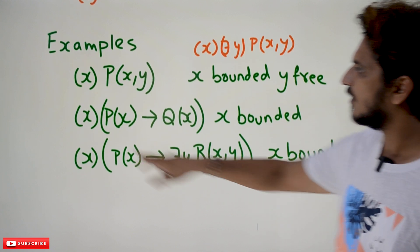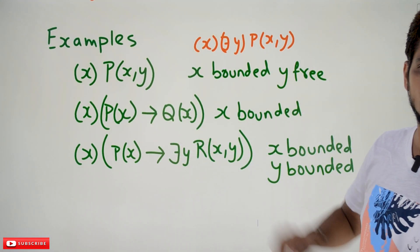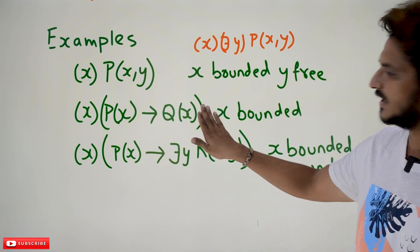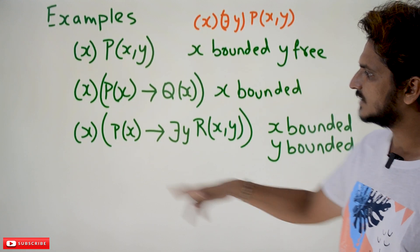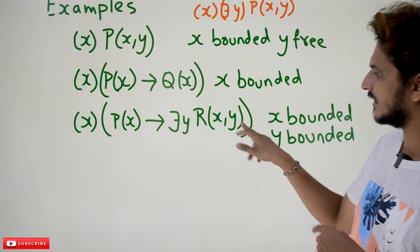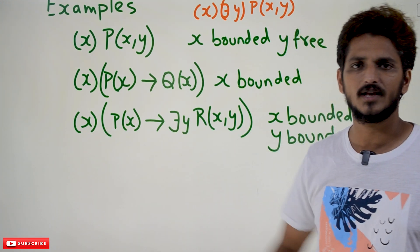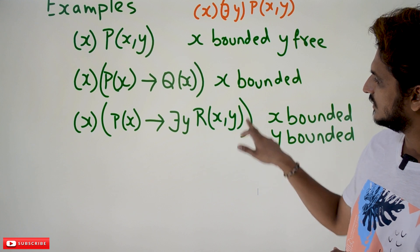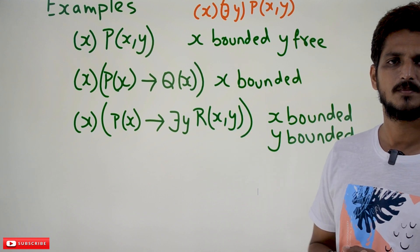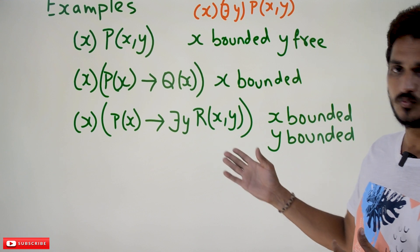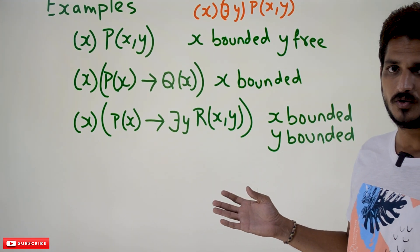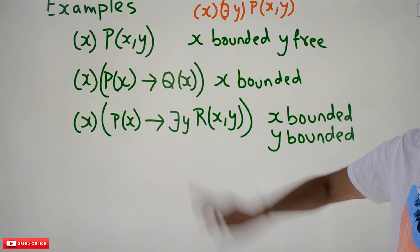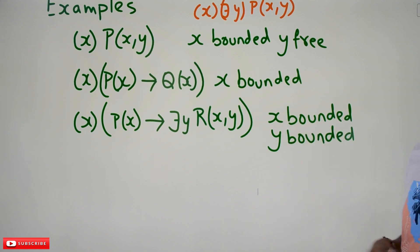One more example: for all x, P(x) implies Q(x). Here x is a bounded variable, and the scope of x belongs to this entire equation. One more example: for all x, P(x) implies there exists y, R(x, y). The scope of 'for all x' belongs to the entire equation. The scope of 'there exists y' belongs only to R(x, y). So both x and y are bounded variables — x is bounded to 'for all,' and y is bounded to 'there exists.'